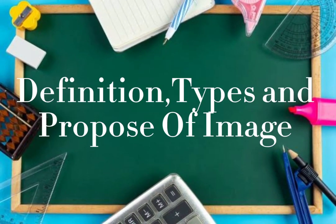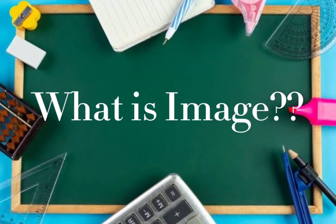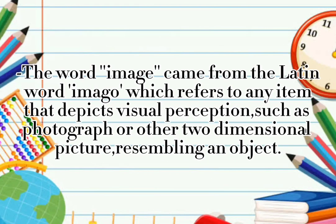Definition, Types, and Purpose of Image. What is image? The word image came from the Latin word imago, which refers to any item that depicts visual perception, such as a photograph or other two-dimensional picture resembling an object.